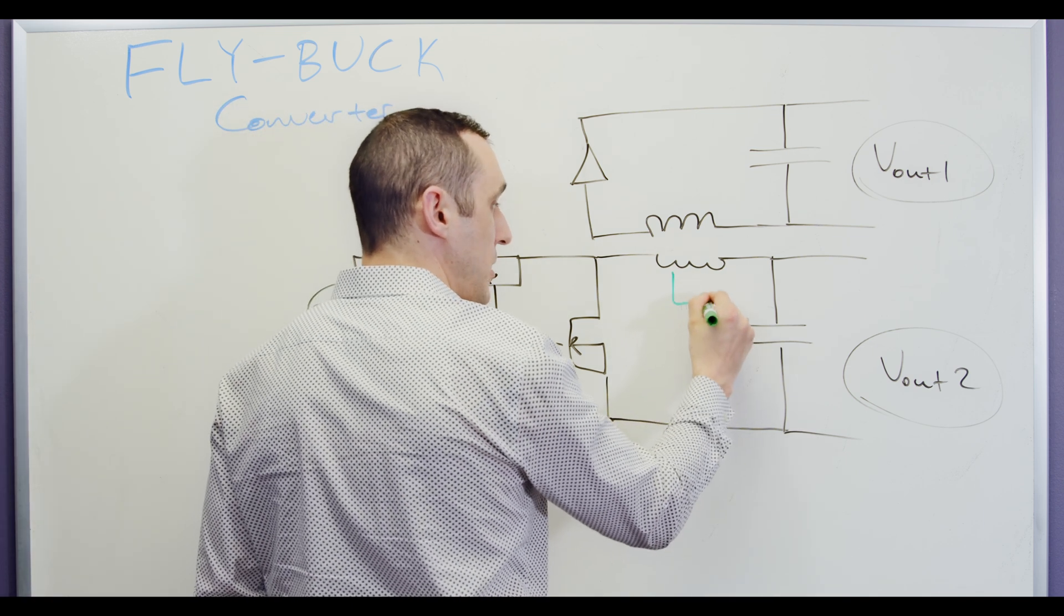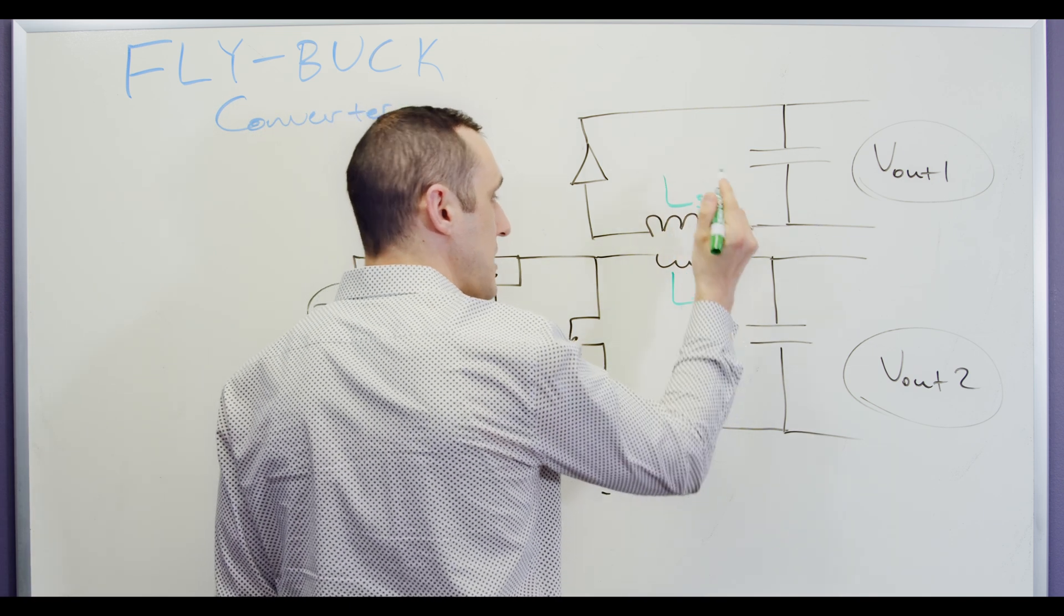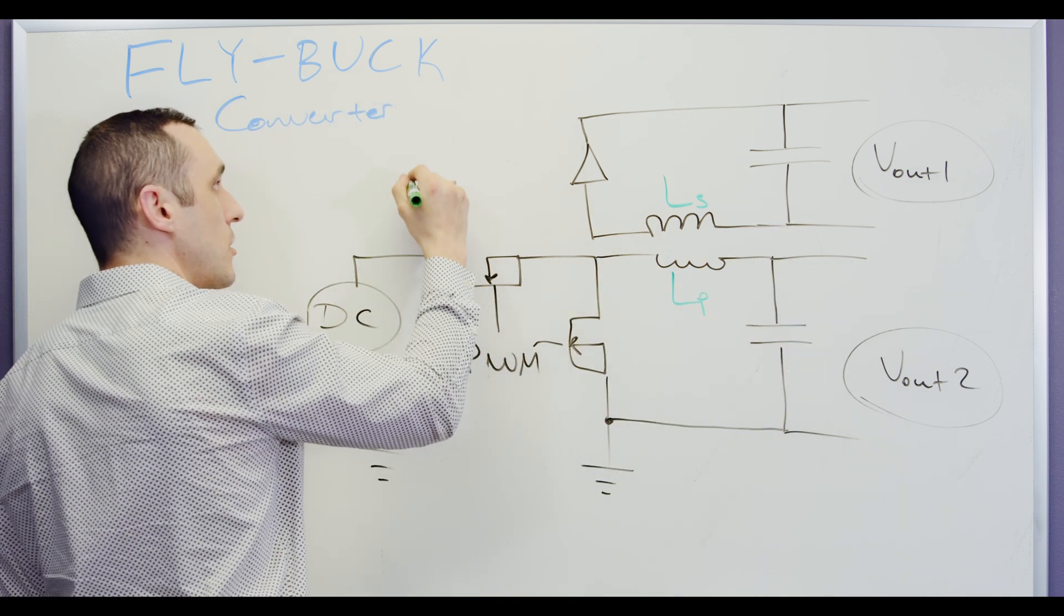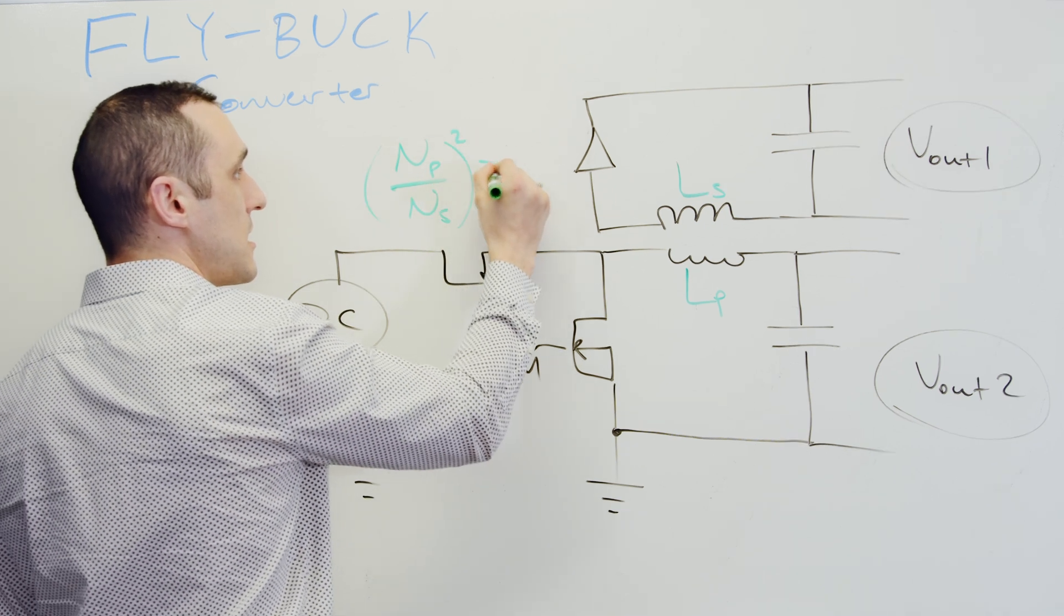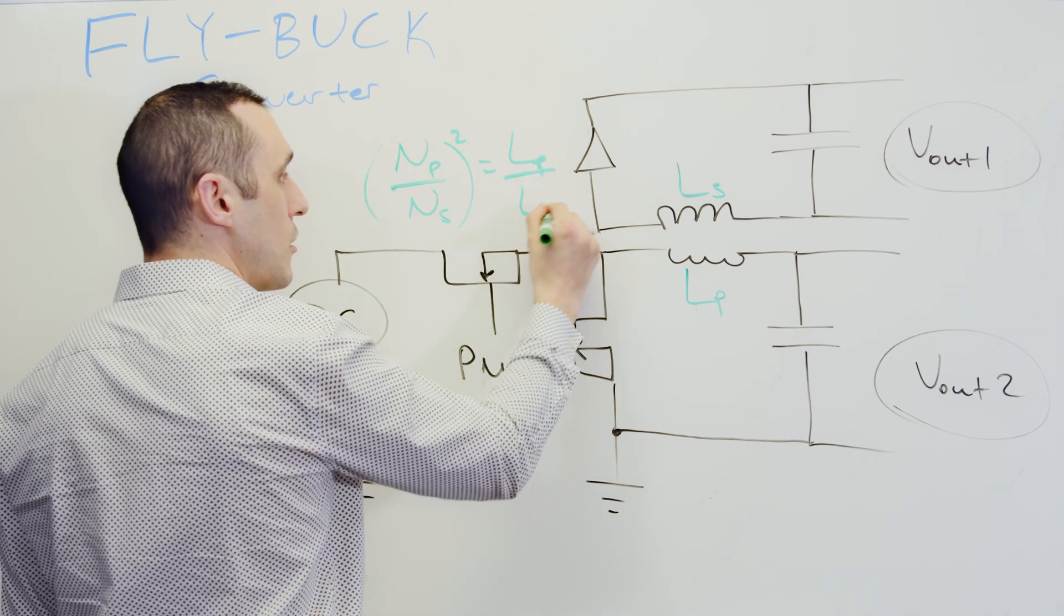So here I have an LP value and I have an LS value. And of course the turns ratio Np over NS squared is equal to LP over LS.